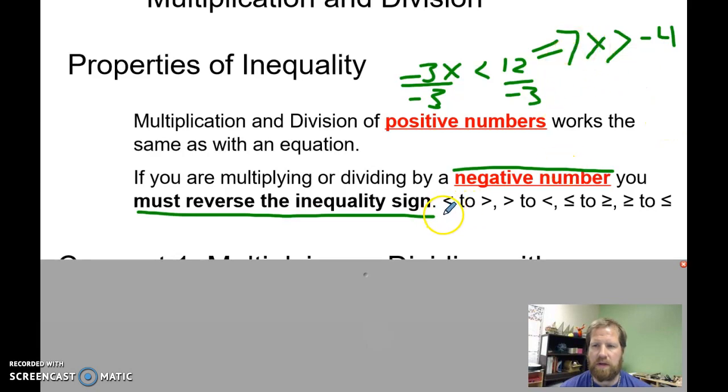If it starts out as less than, it's going to become greater than. If it starts out as greater than, it becomes less than. Same thing for the equal to signs as well. Greater than or equal to turns to less than or equal to.